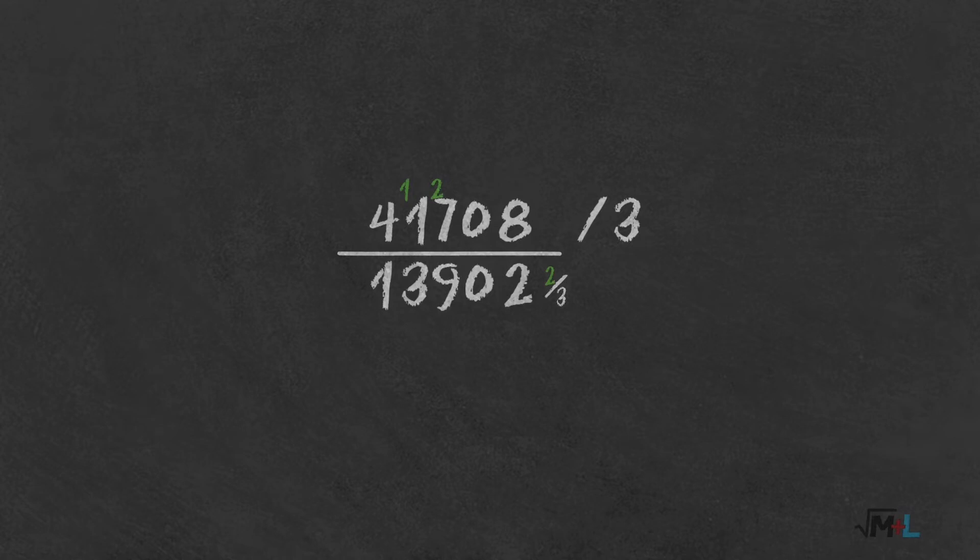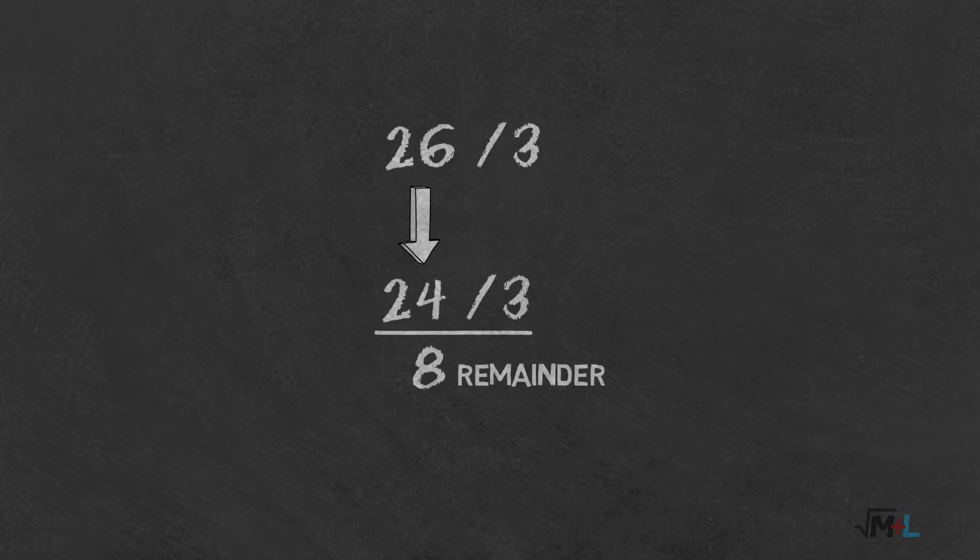First method is the one that comes naturally at first. If number is not divisible by 3, let's say 26, then go down to first number divisible by 3, in this case 24, and divide that instead. The result is 8 and the remainder is how much you had to go down, so in this case 2. Let's see this in action.